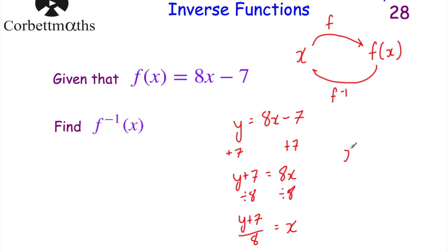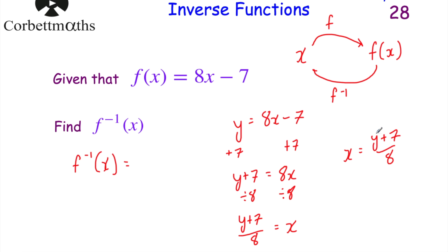So x = (y + 7)/8. This is our inverse function — we replace y with x. So f⁻¹(x) = (x + 7)/8. And that's it.